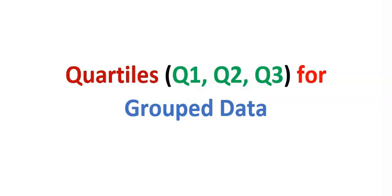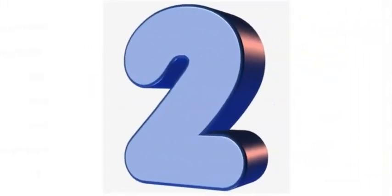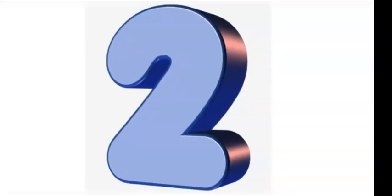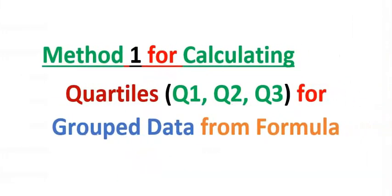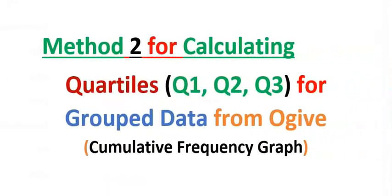At the end of this video, you will learn how to calculate quartiles for grouped data. There are two methods of doing this. The first method is using formula, while the second method is using ogive, which is a cumulative frequency graph. This second method will be considered in the next video.